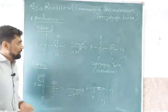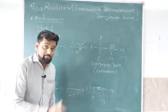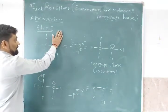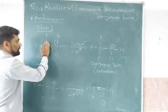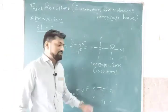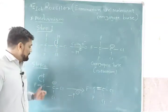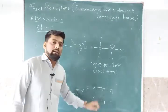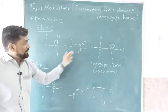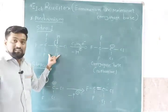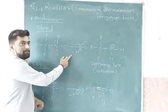First step is H⁺ removed, second step is F⁻ removed — overall HF is removed. This H and F: first step is proton removed to form conjugate base, second step is F (fluorine) removed to form alkene. First step rate of reaction depends on substrate; second step rate of reaction depends on conjugate base.